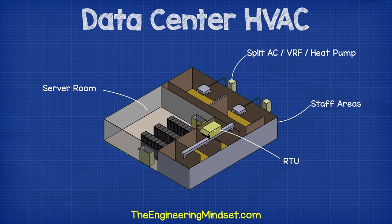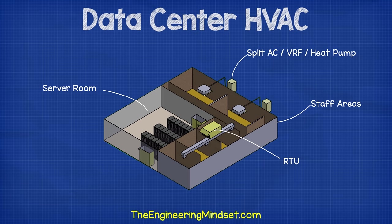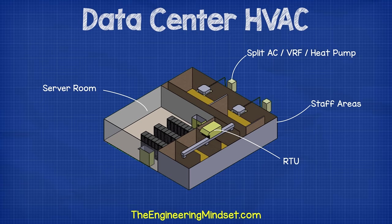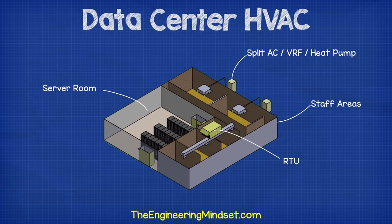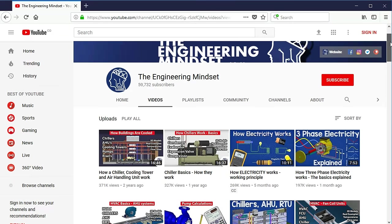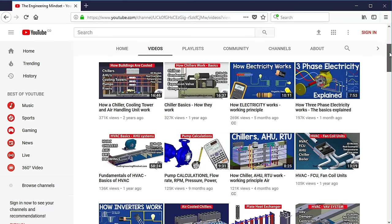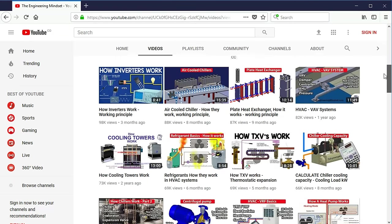These areas will be served by a separate mechanical ventilation system and will use either an air handling unit or a rooftop unit to distribute conditioned air to suit the thermal comfort needs of the humans. They might also use a separate split unit, heat pump or VRF system for temperature control in these areas. I won't go into too much detail in this segment as we've covered these in our previous videos on chillers, AHUs, RTUs. We also have videos on VRF, heat pumps and split AC units.